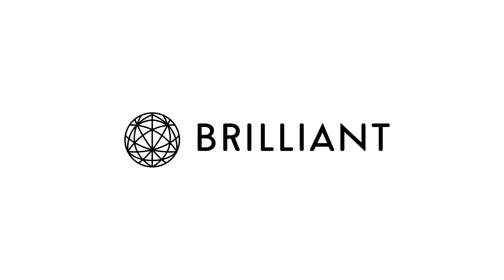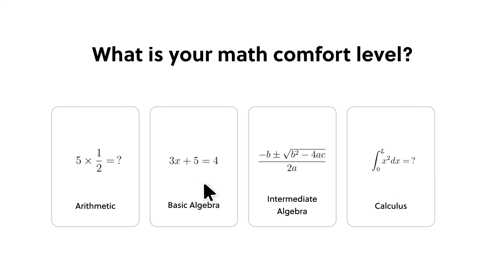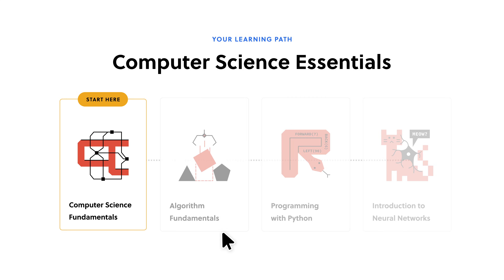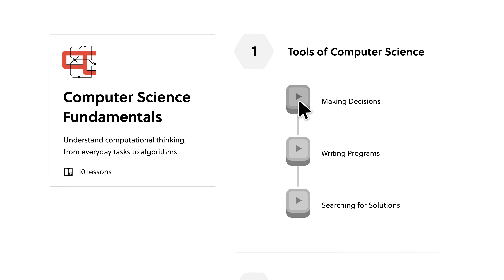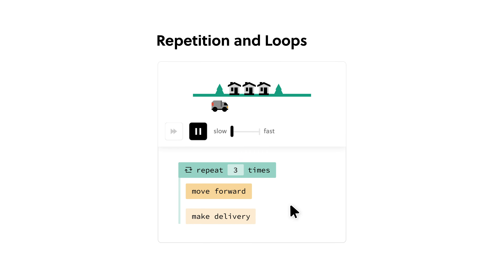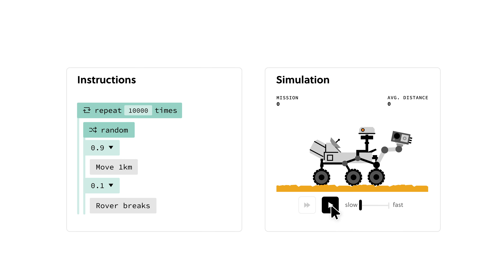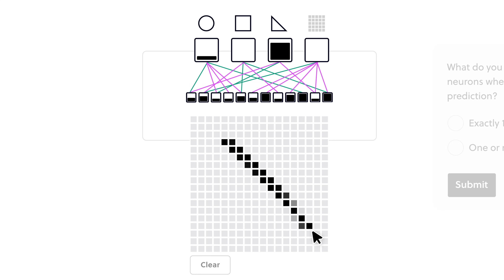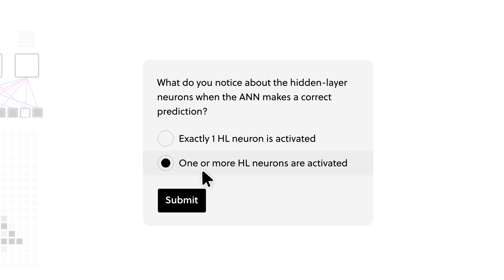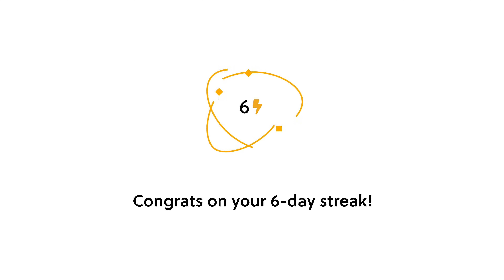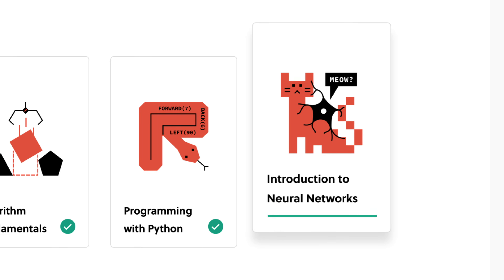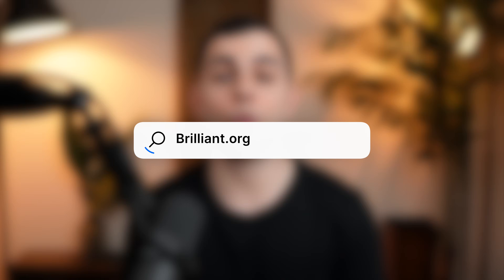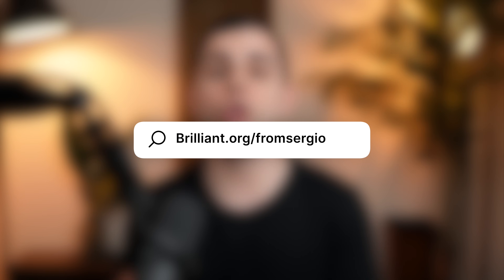If you want to future-proof your career, one of the best ways you can do that is by investing in learning, which is where my sponsor Brilliant.org comes in. Brilliant is the go-to platform for learning maths and sciences in an interactive way. Their storytelling makes even the most abstract ideas relatable, and their visual hands-on approach makes building a daily learning habit not only easy but fun. Brilliant has thousands of lessons from AI to data science with exclusive new content added monthly. Visit brilliant.org/fromSergio — the first 200 people that sign up get 20% off Brilliant's annual premium subscription.